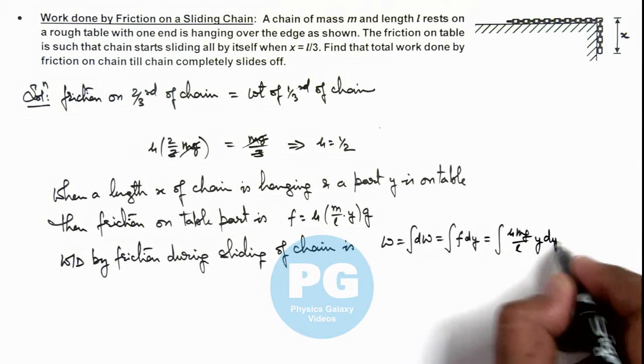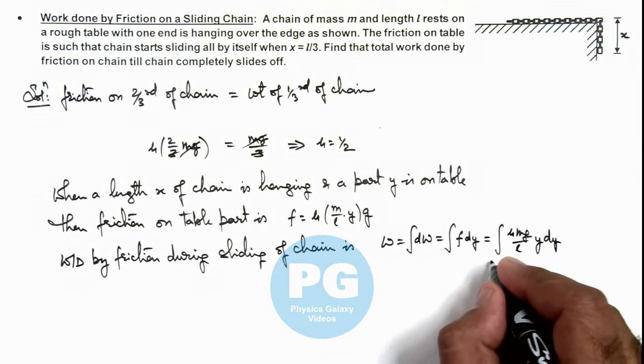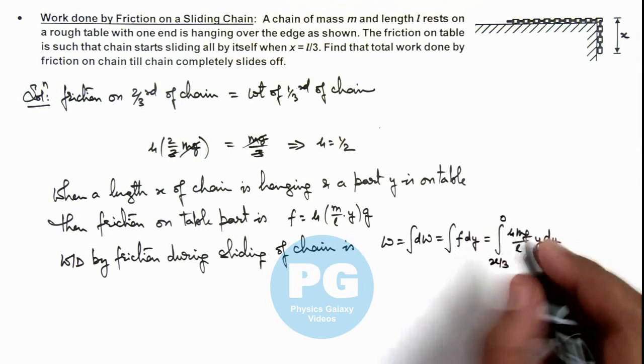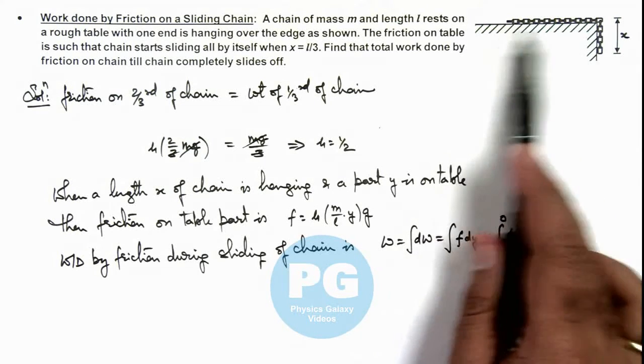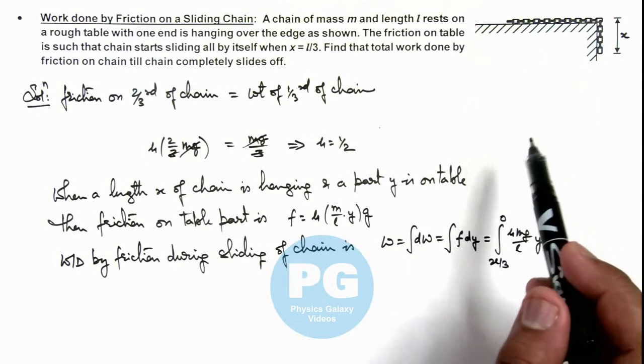y dy and it is integrated from 2l/3 to zero, because initially the length resting on the table is 2l/3 and finally it completely slides off.